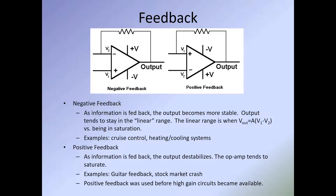With negative feedback, as information is fed back the outcome becomes more stable, and the output tends to stay in the linear range. The linear range is when Vout equals the gain times the difference between V1 and V2, rather than being in saturation. Examples of negative feedback include cruise control and heating/cooling systems — like your home air conditioning set at 70 degrees, which kicks on when too hot or too cold, maintaining a range rather than running rampant up to 90 or 100 degrees. Negative feedback is the most common type of feedback.